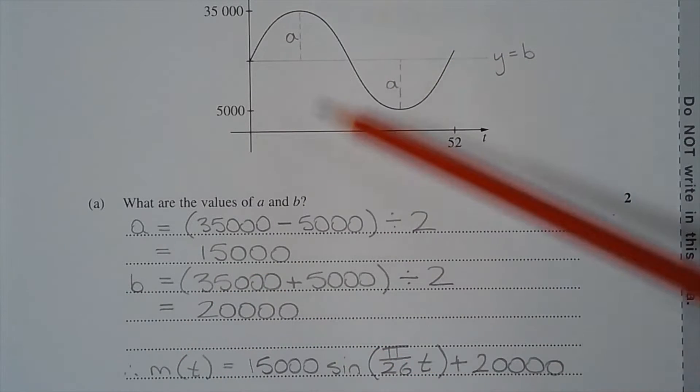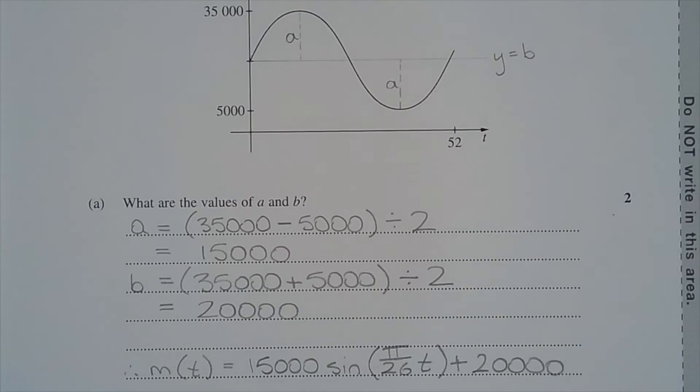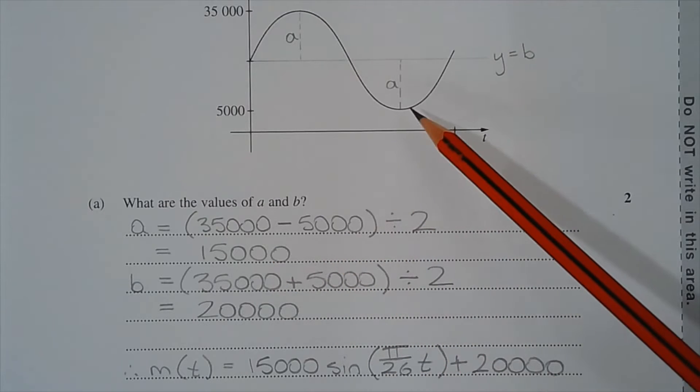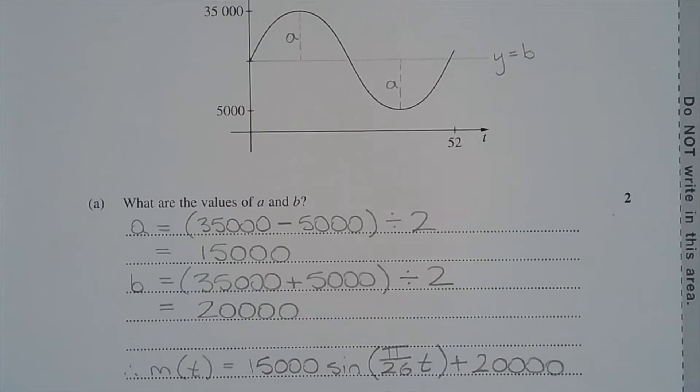Now a can be found by finding the difference between the peak and the trough and dividing that by 2. So a equals 35,000, which is the peak, minus 5,000, which is the trough, and dividing that by 2, that equals 15,000.